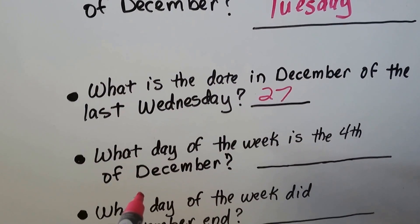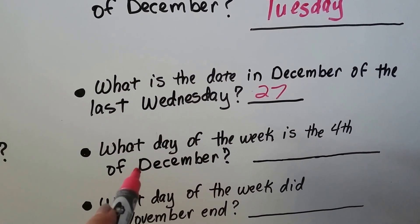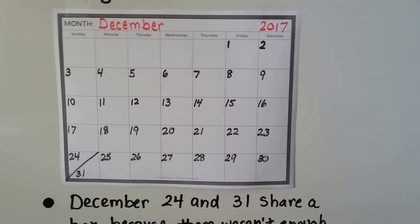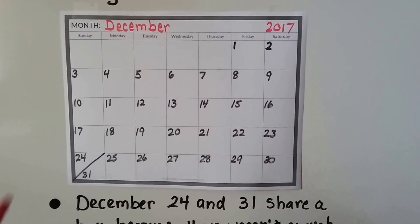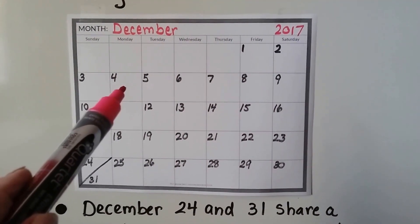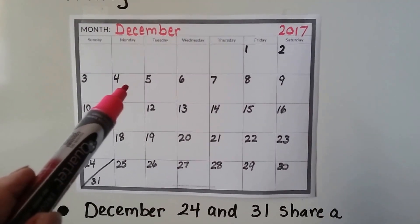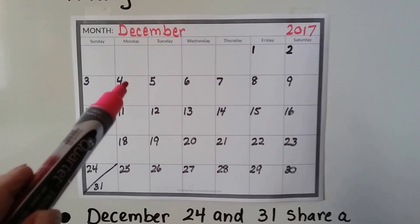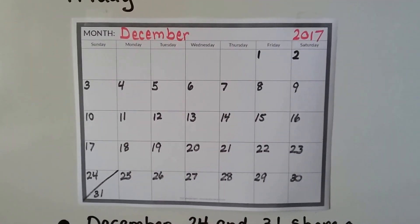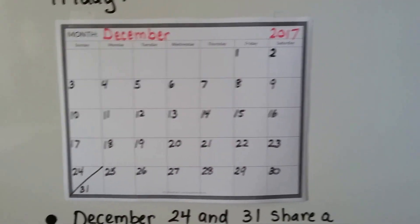What day of the week is the 4th of December? We find the four — here it is. What day of the week is it? That means it wants the day's name. It's a Monday — the 4th falls on a Monday.